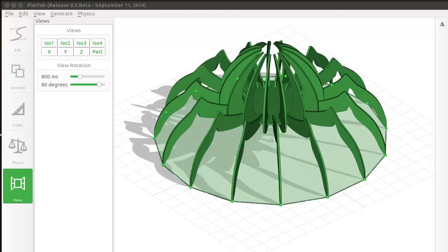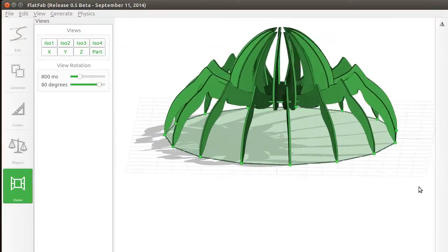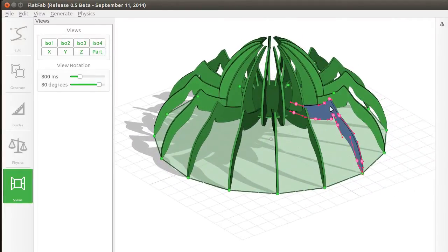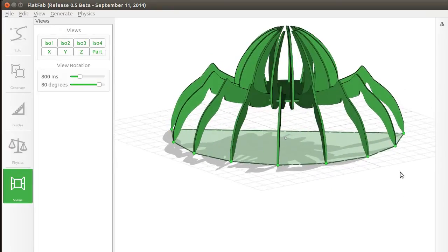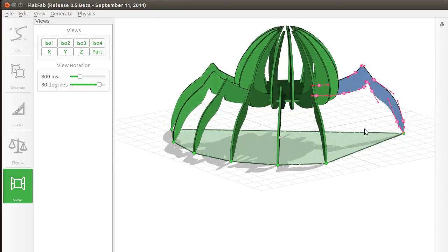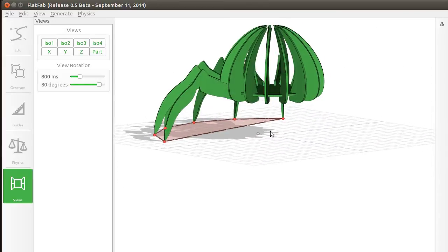To ensure the fabricated model would function as intended, additional tests are integrated in our system. The first is the stability test, which ensures that a model will stand freely. This is done by testing if the center of mass, projected onto the ground plane, falls within the convex hull of contact points, as shown.